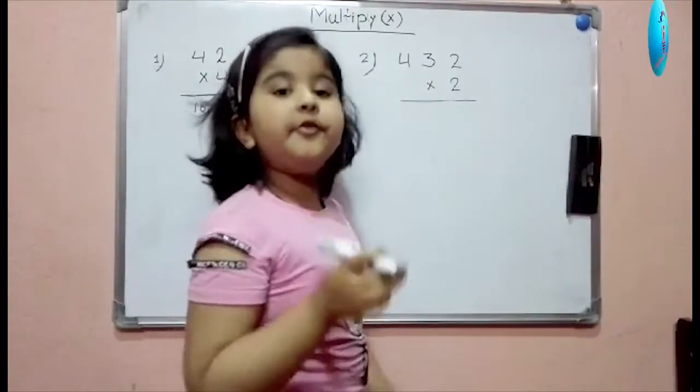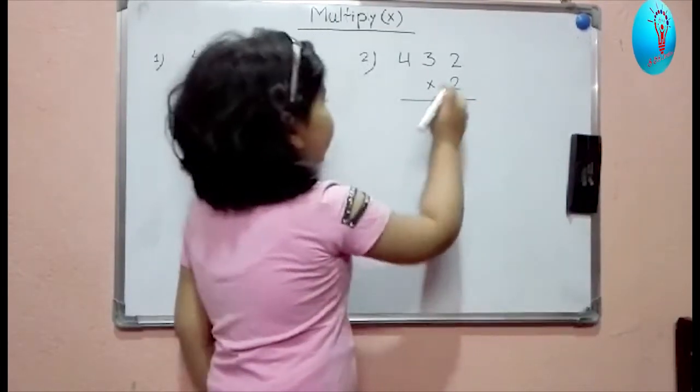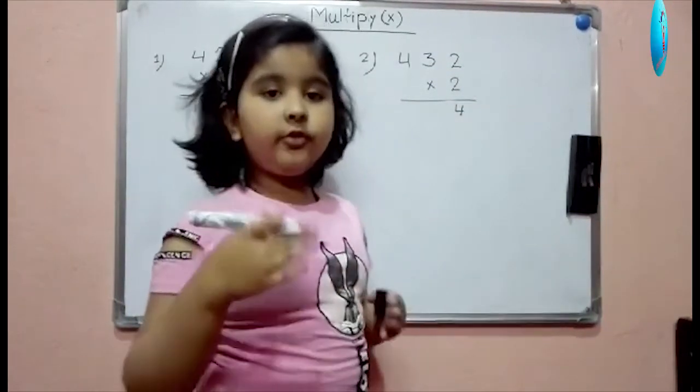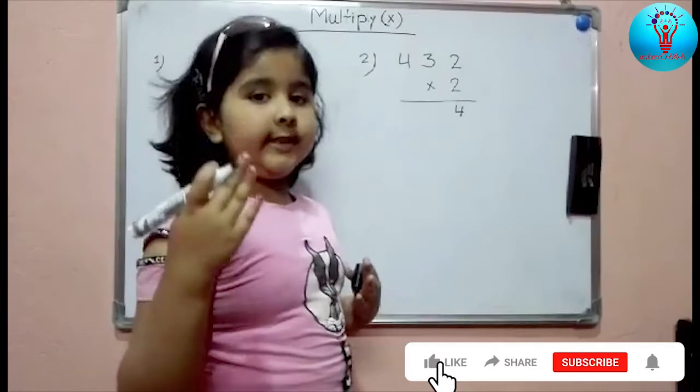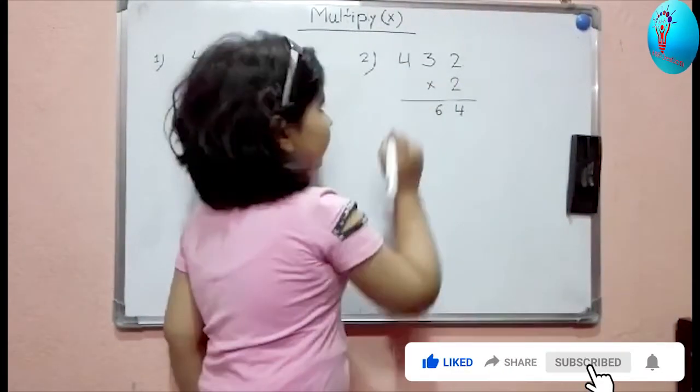Now let's do another multiply. 2 times 2 is how much? 2 times 1 is 2, 2 times 2 is 4, so here will be 4. And 2 times 3 is how much? 2 times 1 is 2, 2 times 2 is 4, 2 times 3 is 6. So the answer is 6.